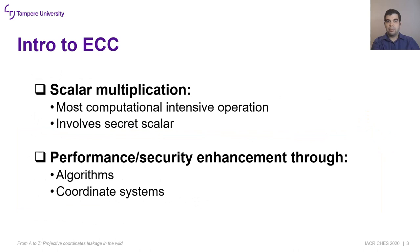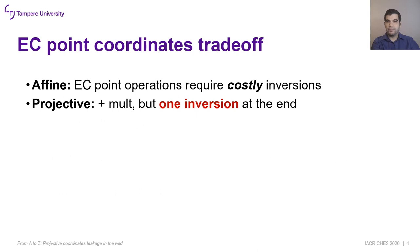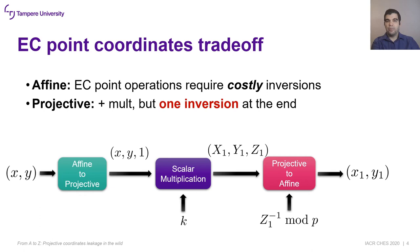The scalar multiplication is the most computationally intensive operation in ECC, hence increasing its performance is desirable. Two different paths are followed to this end: proposing different algorithms and using different coordinate systems. An elliptic curve point is represented by its affine coordinates. However, operations using these coordinates require costly inversions. Therefore, in practice, projected coordinates are preferred as they only require one inversion after the scalar multiplication.